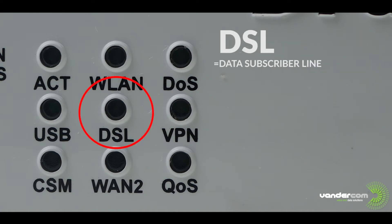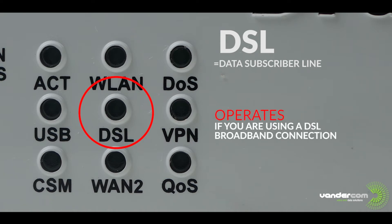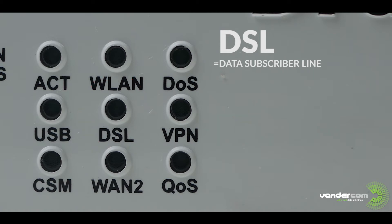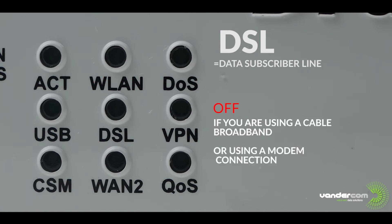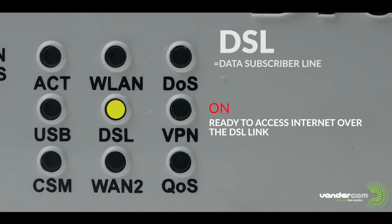DSL is data subscriber line. This light operates if you are using your router with a DSL broadband connection. If you have a cable broadband or are using a modem, this light will be off. When this light is on, the router is ready to access the internet over the DSL link.